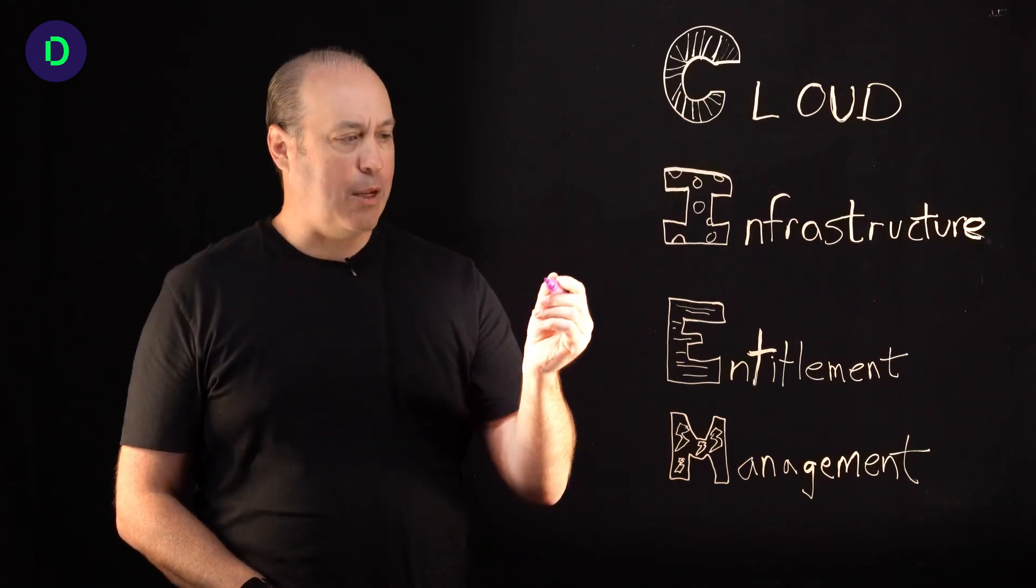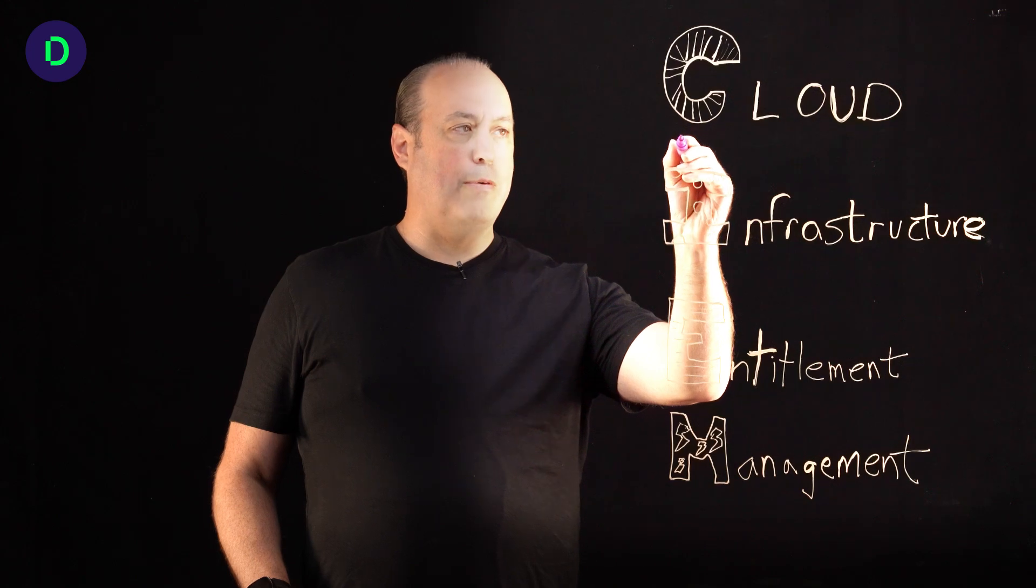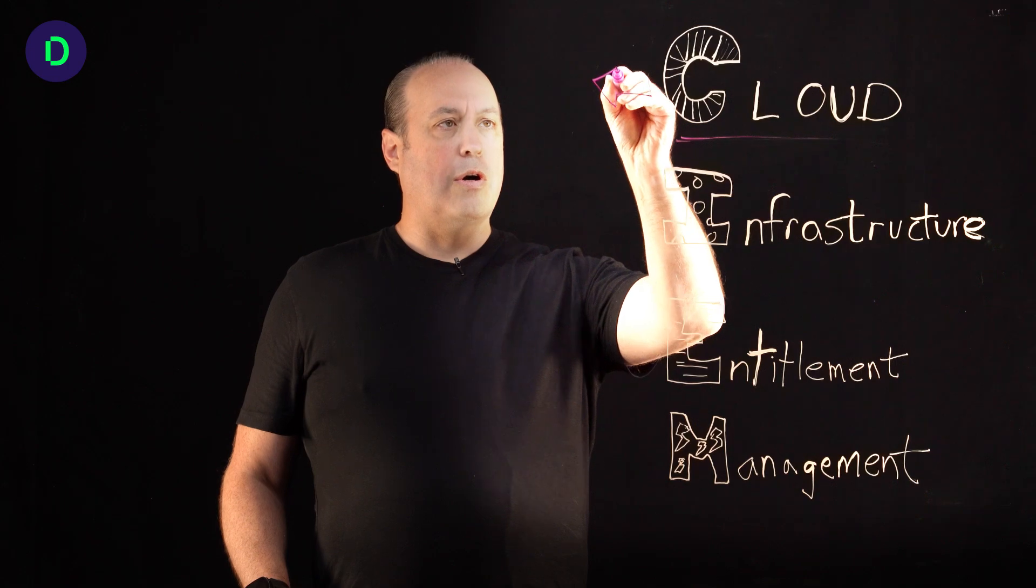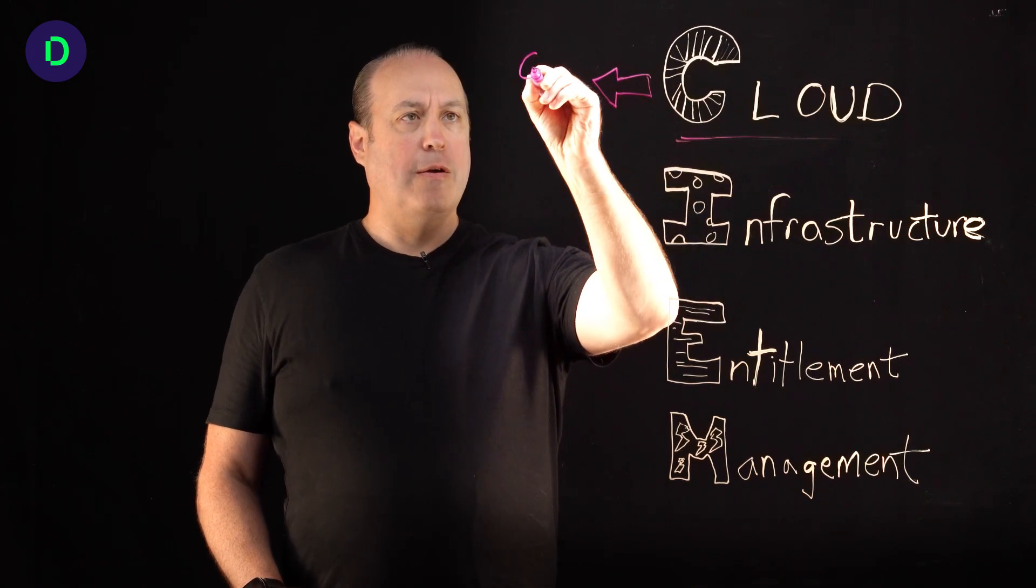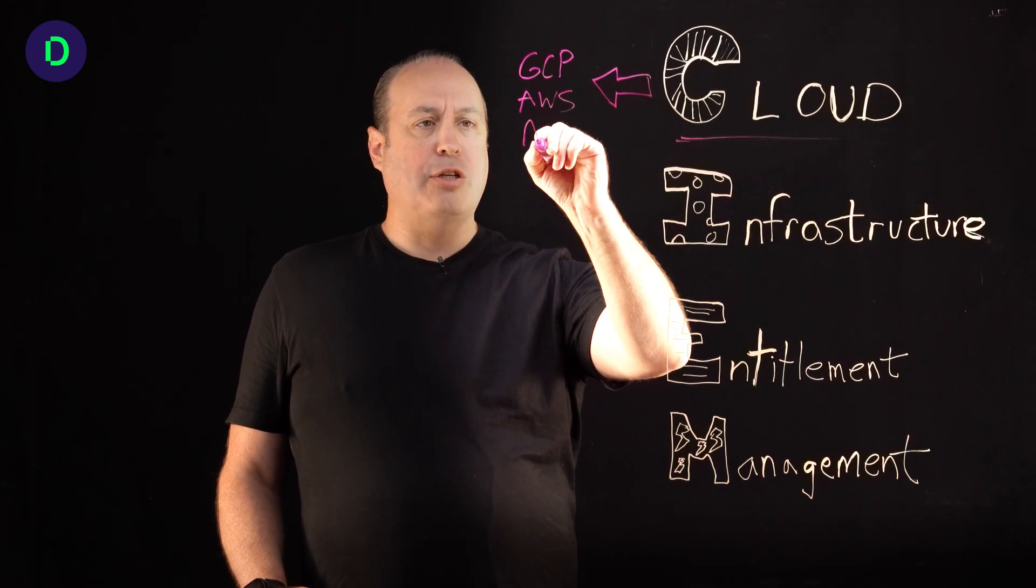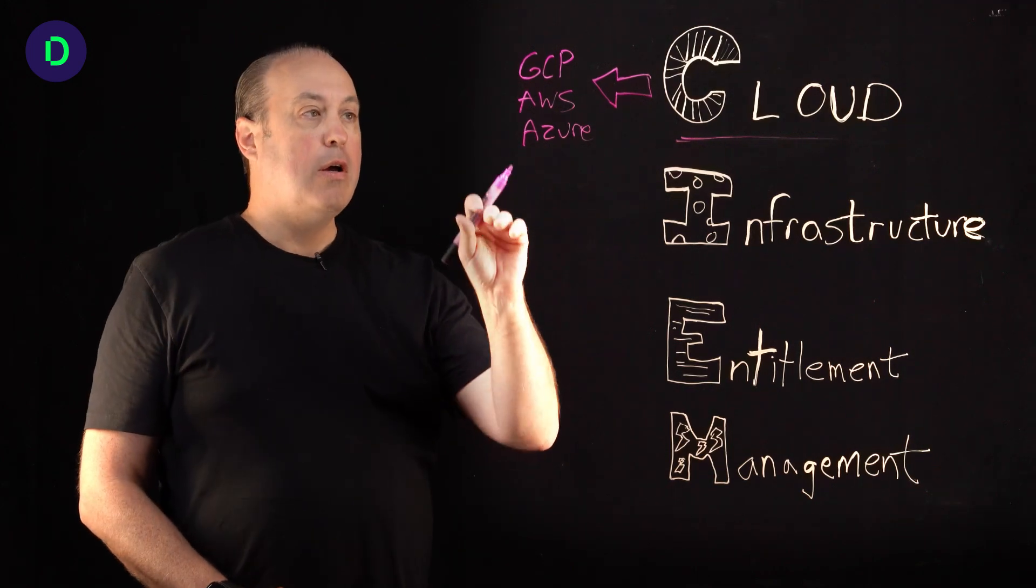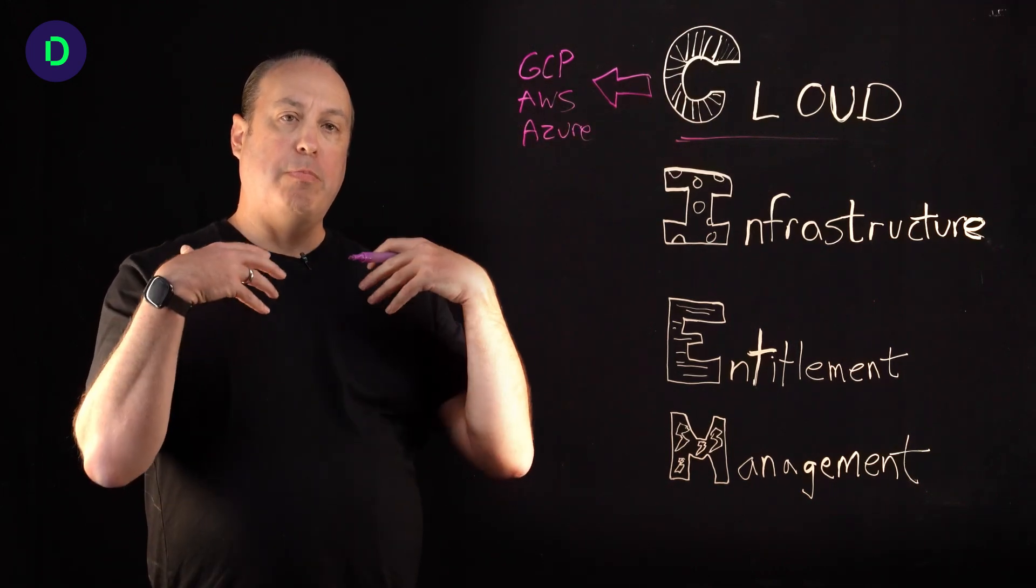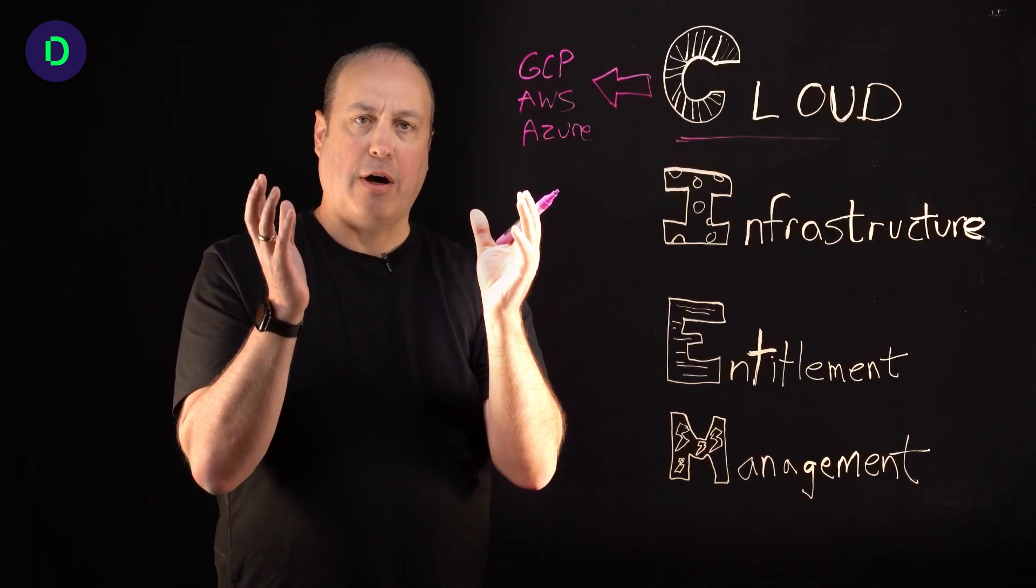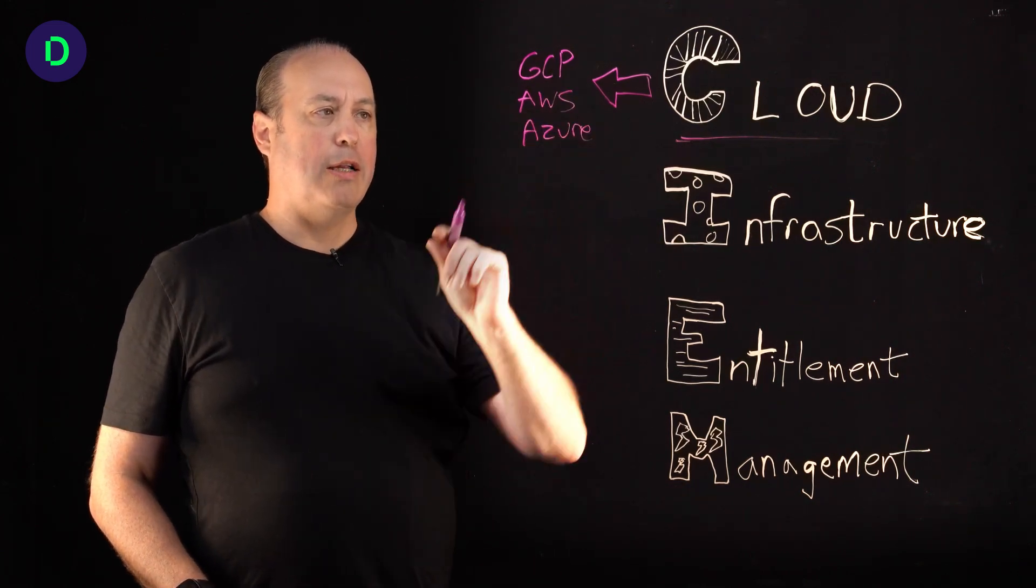The first thing to note about CIEM is it's cloud. And when we say cloud, we mean the multi-cloud. So we mean your GCP, your Google Cloud, your AWS, your Azure, and it could be many others. Maybe you have an Oracle Cloud or Alibaba, whatever. But it's the cloud that you're building your infrastructure, putting your company into, running your applications off of, the ones that are customer facing. So it's very critical to understand what's going on in these clouds.